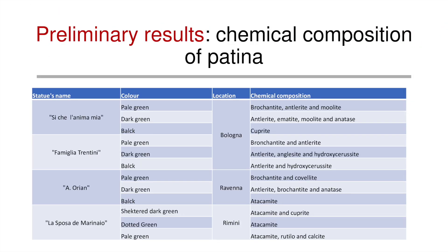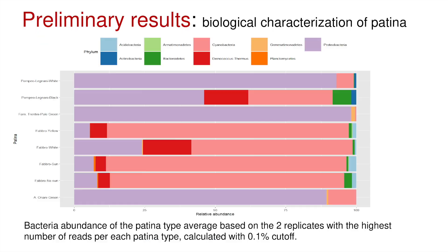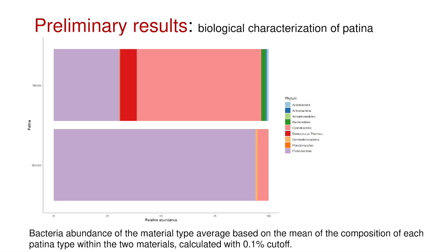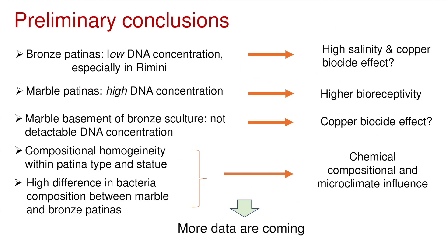We obtained as a preliminary result the chemical profile of the bronze patinas and the bacterial community composition per patina and also per material. Bronze patinas are dominated by Proteobacteria, while the marble ones show a more complex composition. We found low DNA concentration on bronze patinas, especially in Rimini, and also on the marble basement of bronze statues, which could be the consequence of a biocide effect of copper. On marble patinas, we found high DNA concentration, and homogeneity within patina type and statue was found.